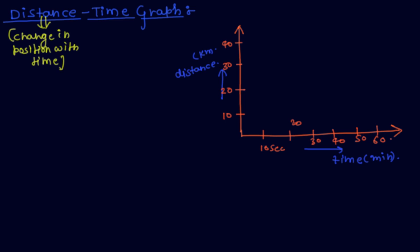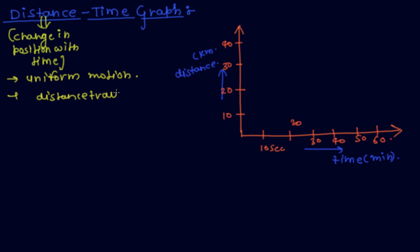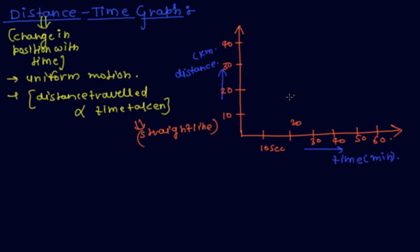Now if I talk about uniform motion — uniform motion means equal distance in equal time interval, or I can say with uniform speed. This means distance in equal time interval is directly proportional to time taken, which gives a straight line. So the graph of uniform motion is a straight line.